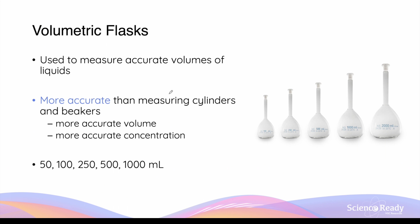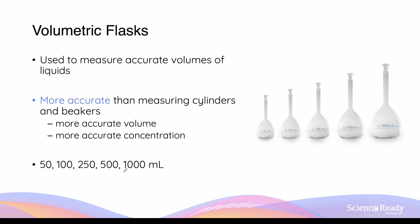When making a standard solution, we always use a glassware called a volumetric flask. Volumetric flasks measure accurate volumes of liquids, rather than measuring cylinders or beakers, and will always offer more accurate volumes and therefore more accurate concentrations. Concentration depends on both the moles of the standard added and the volume of solvent added. So when making a standard solution, you should never use a beaker or measuring cylinder to measure the volume of the solvent.